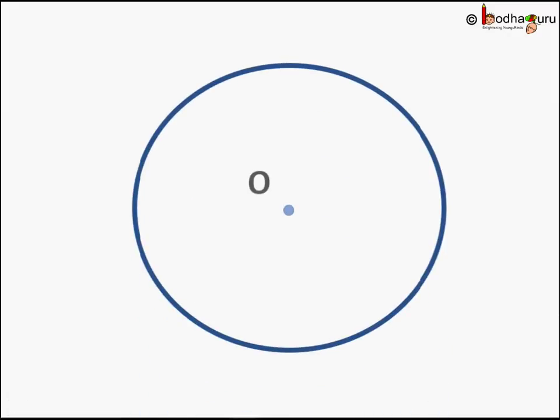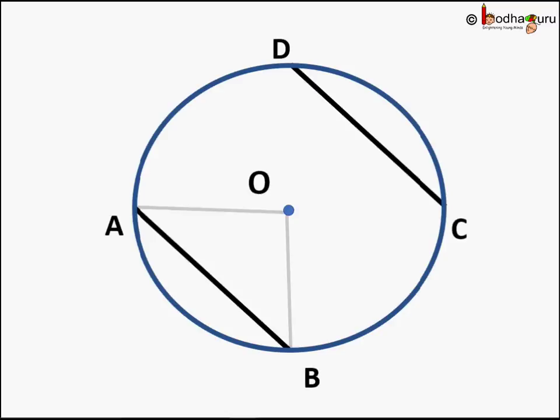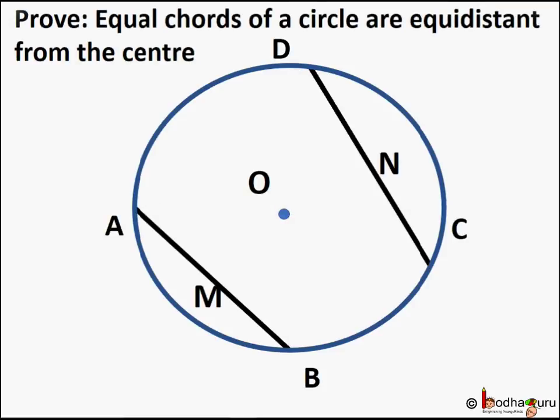Hello friends. In our last lesson we learned that equal chords of a circle subtend equal angles at the center. This means if the length of chords AB and CD is equal, then angle AOB and angle COD would be equal. This theorem leads to another important theorem.